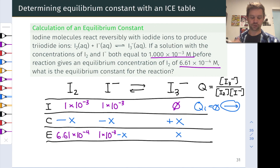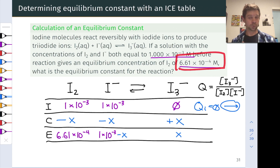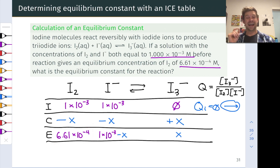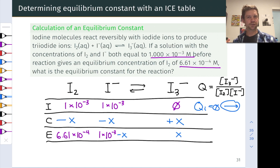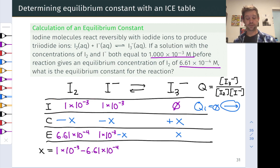Next up, we add the initial and change lines. We know one of the equilibrium concentrations — the I₂ concentration at equilibrium is 6.61 × 10⁻⁴ moles per liter, which I've plugged in directly from the problem statement. For the others, we don't exactly know how much is there yet: 1 × 10⁻³ minus x for I⁻, and x for I₃⁻. Based on ICE table logic, the I₂ equilibrium concentration must equal 1 × 10⁻³ minus x, and we can use this fact to solve for x.